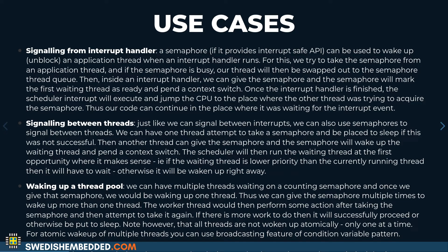It is also used for signaling between threads — a semaphore is usually given in one thread or an interrupt, and then taken in another thread. It's very rare that you both take and give the semaphore in the same thread, because it doesn't really make sense. We can also use the semaphore to wake up multiple threads in sequence, though we can only wake up one thread at a time atomically — unlike a conditional variable which has the ability to wake up multiple threads at the same time.